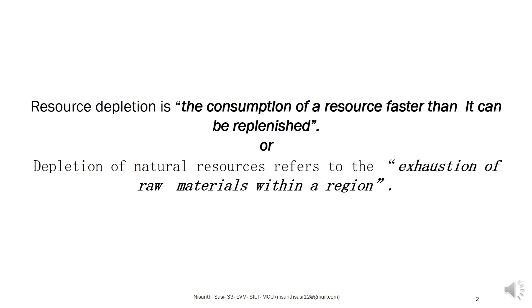When we consider resource availability, we can simplify this as fossil fuel being depleted. The second definition is the exhaustion of raw materials within a region. If we consider fossil fuel in India as an example, its availability will eventually be exhausted, as it cannot be reproduced within a short timeframe.